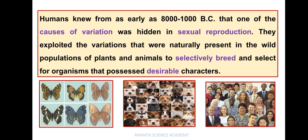Humans knew from as early as 8000 to 1000 BC that one of the causes of variation was hidden in sexual reproduction. They exploited the variations that were naturally present in the wild populations of plants and animals to selectively breed and select for organisms that possessed desirable characters.